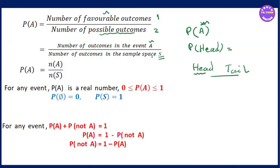The number of outcomes in event A divided by the number of outcomes in the sample space — that is P(A). This formula is for any event. PA is a real number. So if PA is a real number, the probability term is 0 to 1: 0 is less than or equal to P(A), less than or equal to 1.